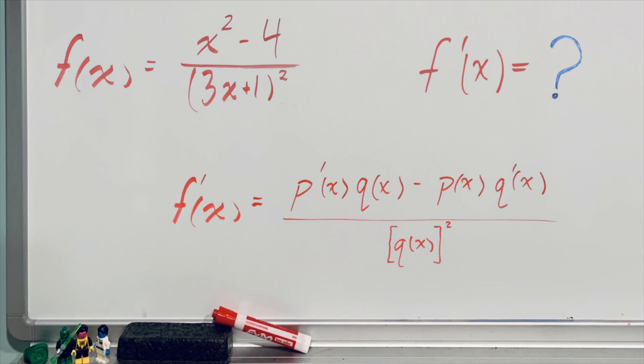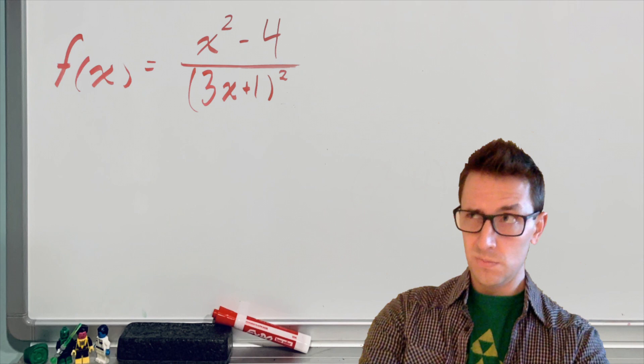But we can sidestep this process entirely using two other derivative rules you've already learned. Unless you haven't learned them yet, in which case it is probably better to just use the quotient rule. But I digress.